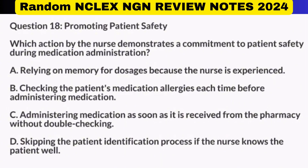A. Relying on memory for dosages because the nurse is experienced. B. Checking the patient's medication allergies each time before administering medication. C. Administering medication as soon as it is received from the pharmacy without double-checking. D. Skipping the patient identification process if the nurse knows the patient well.